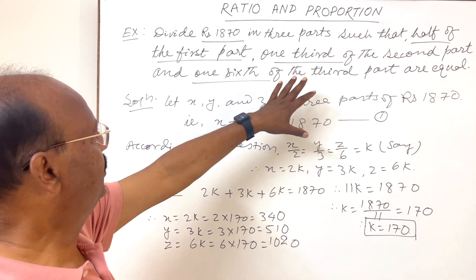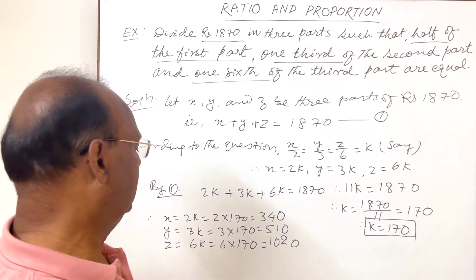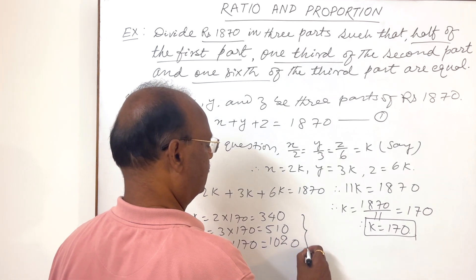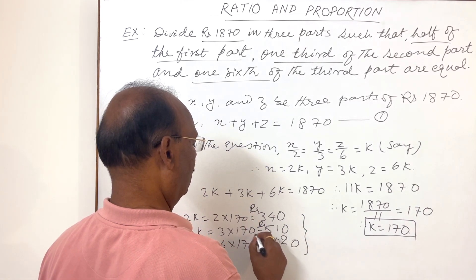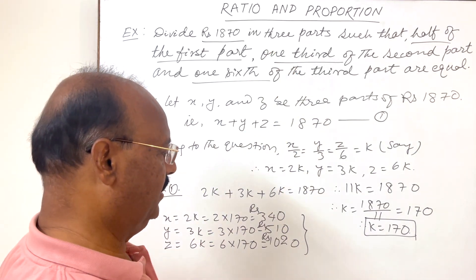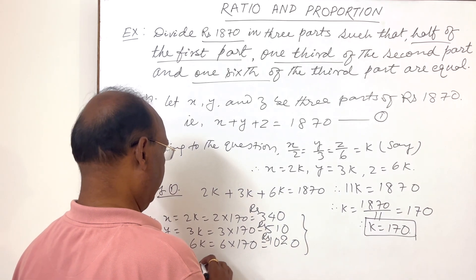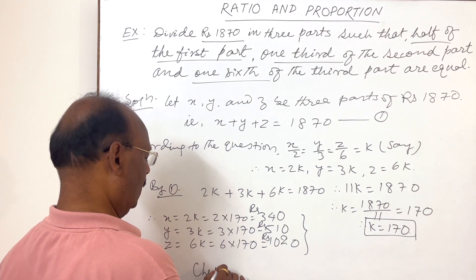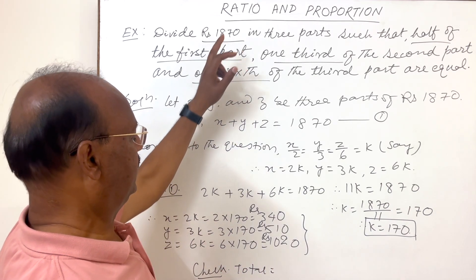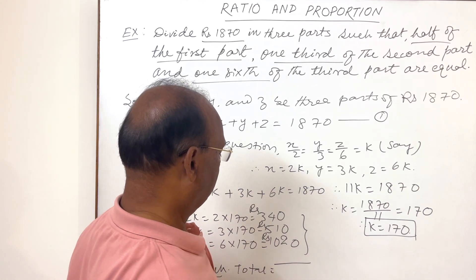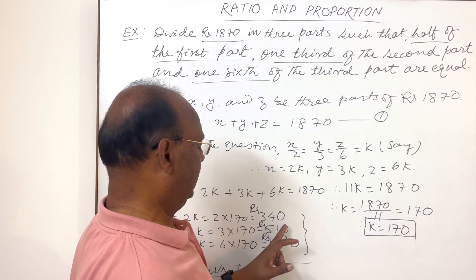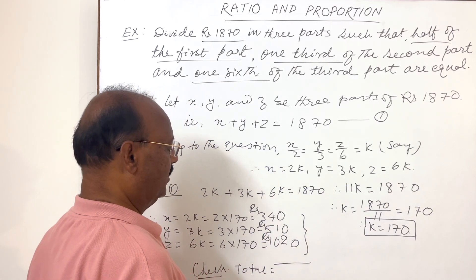So these are the three parts into which 1870 is divided according to the given condition: rupees 340, rupees 510, and rupees 1020. Now let us check the answer. The total of these three numbers should be 1870.